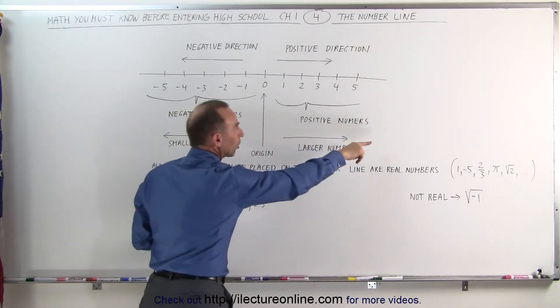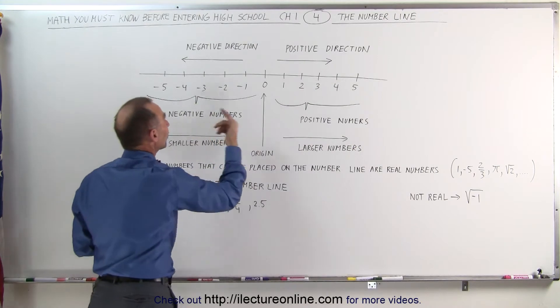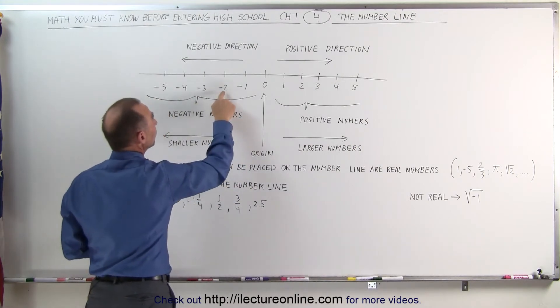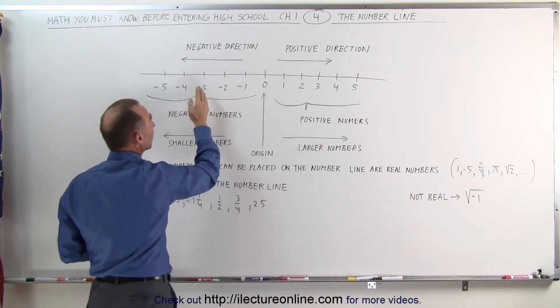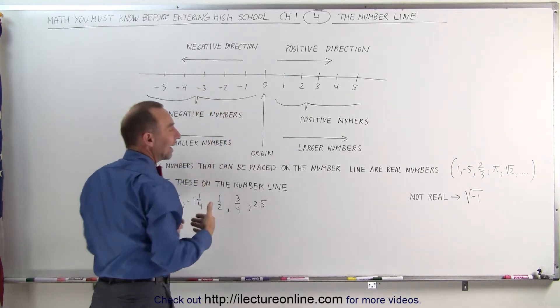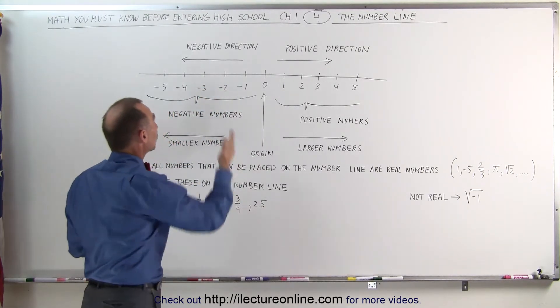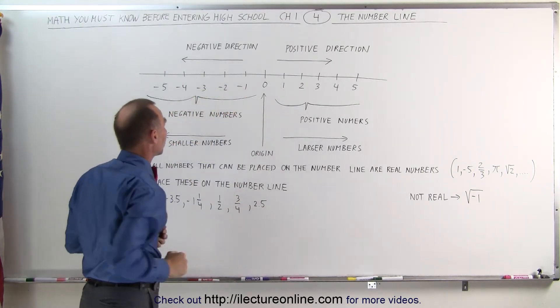Numbers to the right are larger than numbers to the left. For example, negative 2 is larger than negative 3 because it's to the right of negative 3. And that's how we can tell the difference between smaller numbers and larger numbers once they're on the number line.